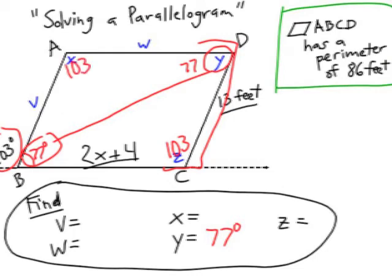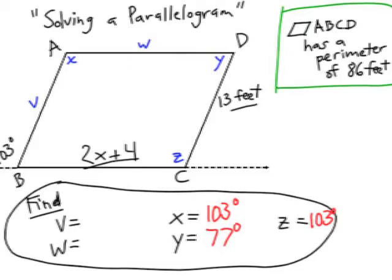Now let's look at the side lengths of this parallelogram. I know that DC is 13 feet, which means that V is also 13 feet. Opposite sides of a parallelogram are congruent. So if BC is 2x plus 4, then W must be 2x plus 4, and we need to solve for x.